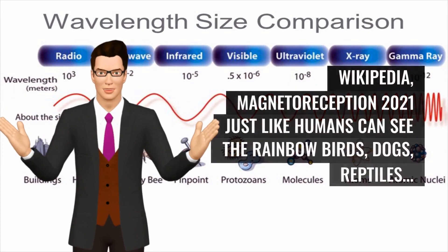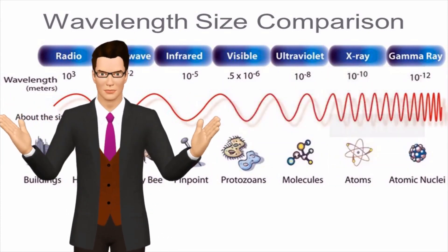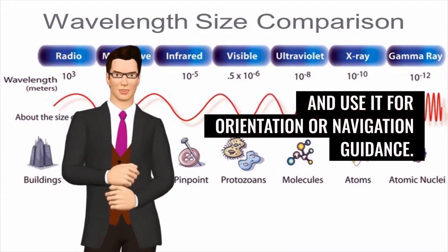Just like humans can see the rainbow, birds, dogs, and reptiles can see Earth's magnetic field in different colors and use it for orientation or navigation guidance.